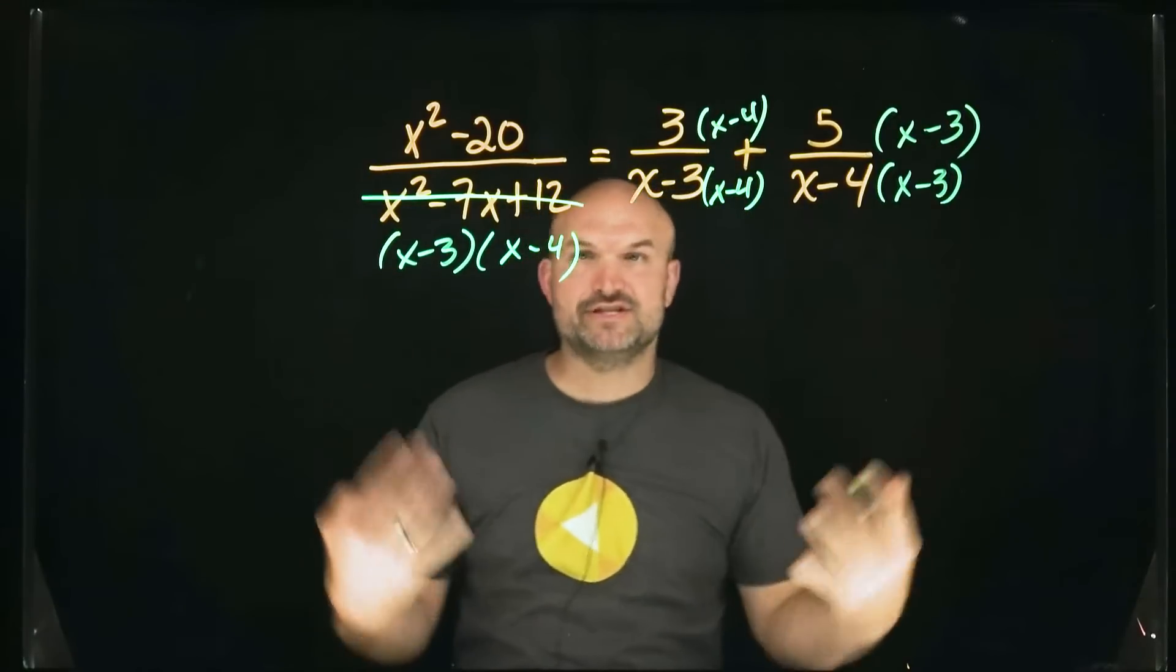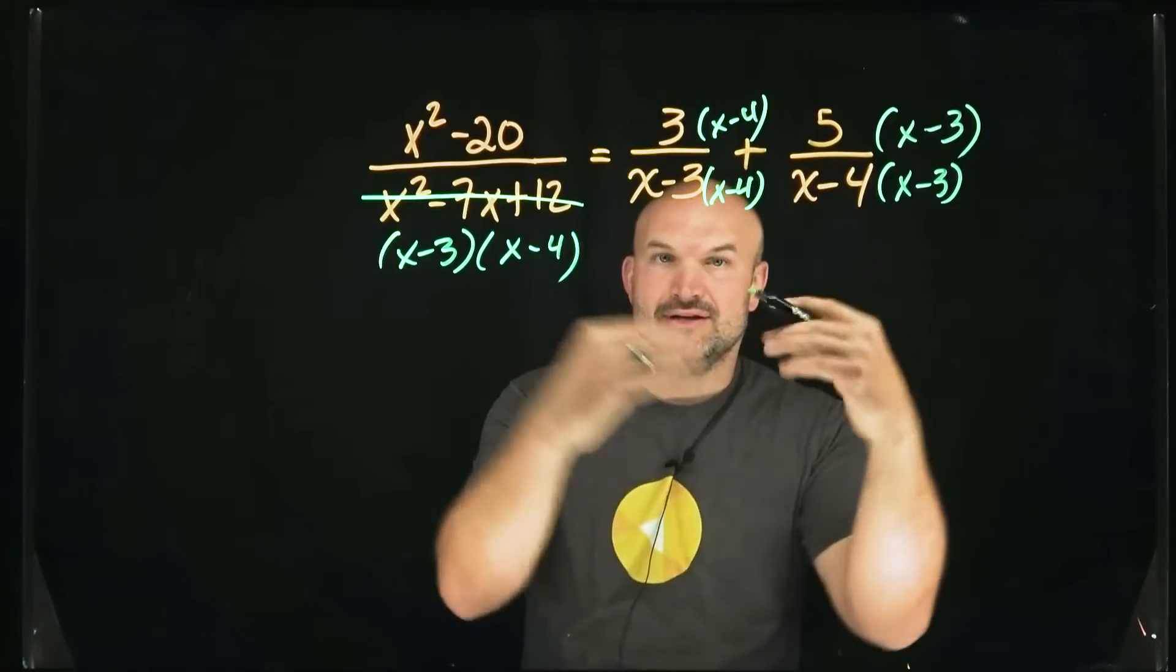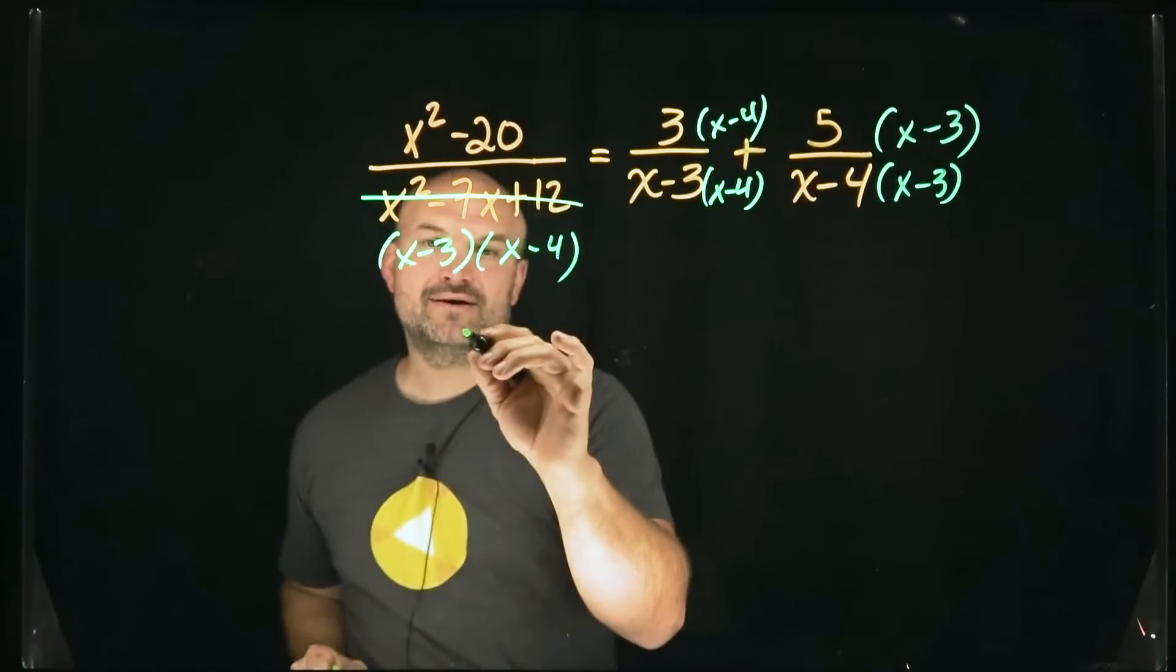Now what I want you to see is I have this equation where each and every expression has the exact same denominator. So therefore, I can now just go ahead and take my numerators. So I'm going to rewrite this now.